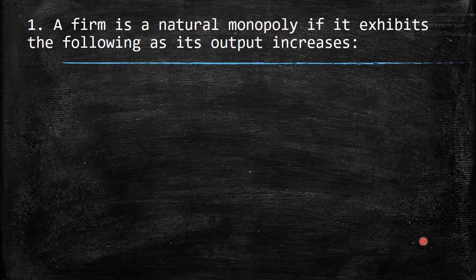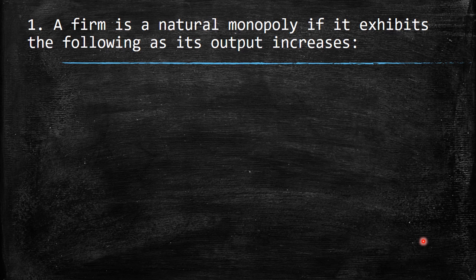The first question says: a firm is a natural monopoly if it exhibits the following as its output increases. Remember, a natural monopoly is one where the conditions in the market are settled just for this company to be in the market. If other companies go into the market, it's not going to be logical for the consumers or for them as well.